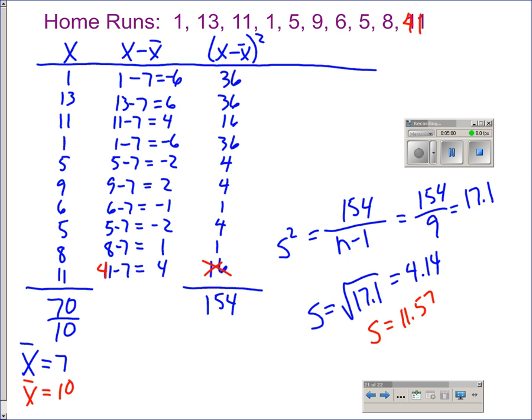The standard deviation is not resistant to outliers either. If you have a distribution with outliers present, then you should use the median and IQR. If your distribution is symmetric without outliers, then you should use the mean and the standard deviation.